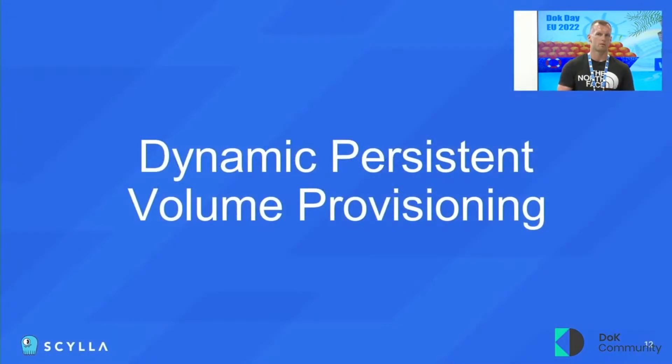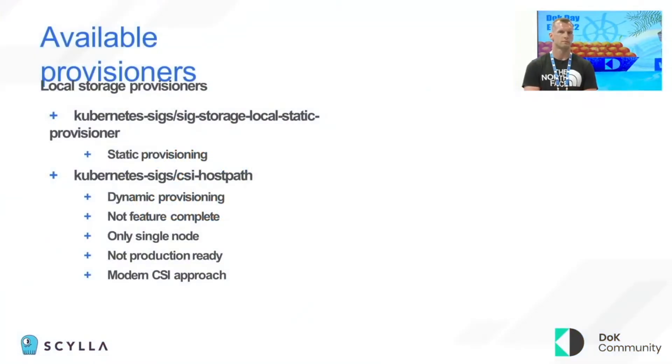Now let's talk about dynamic persistent volume provisioning for local storage. Currently there are only two available options. There is the local static provisioner Thomas talked about earlier, but unfortunately it only supports static provisioning, so manual actions are needed. And there is also a CSI host path which provides dynamic provisioning, but unfortunately it's not feature complete — it supports only a single node and is not production ready, though it does follow a modern CSI approach.